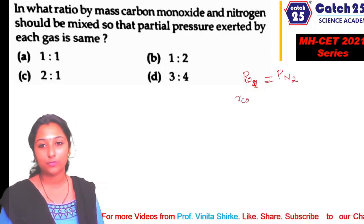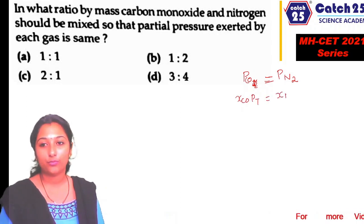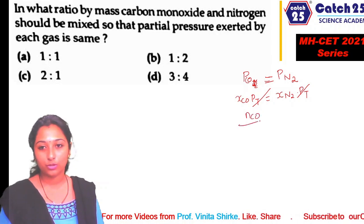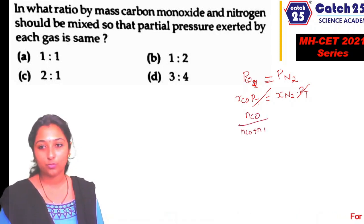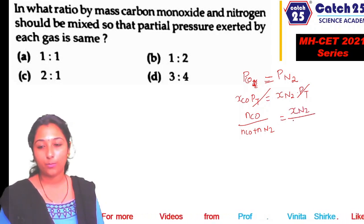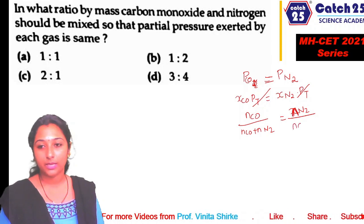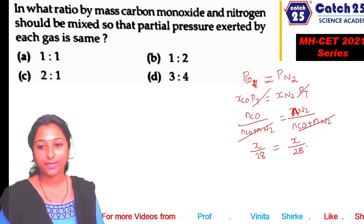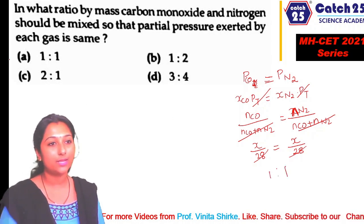For partial pressures to be equal, mole fractions must be equal, so moles of CO = moles of N2. Let mass of CO = x, then moles of CO = x/28 and moles of N2 = x/28 (molar mass of both CO and N2 is 28). So the masses are equal, giving a ratio of 1:1. Answer is A.